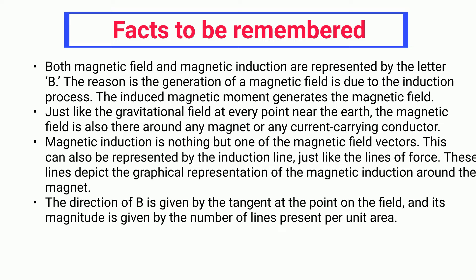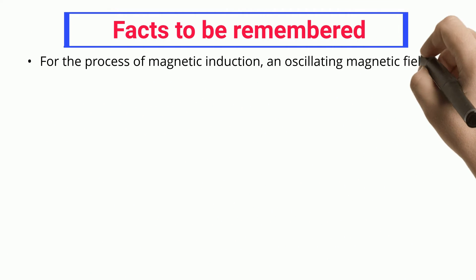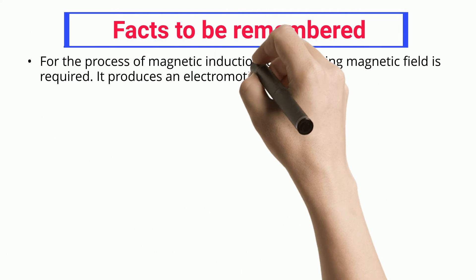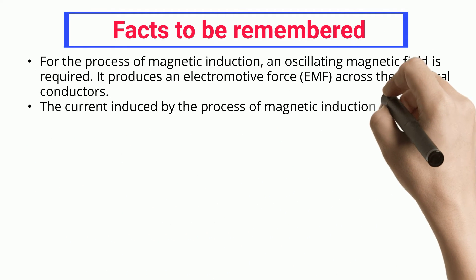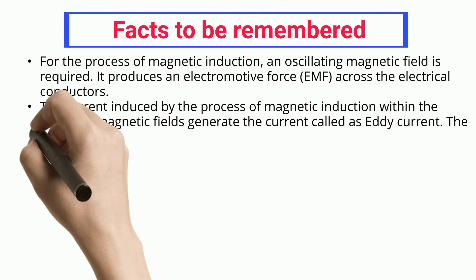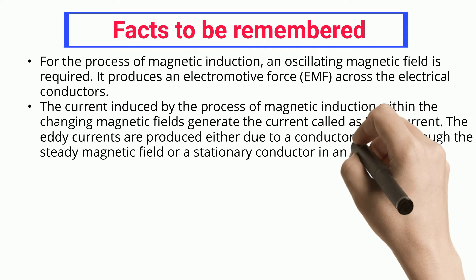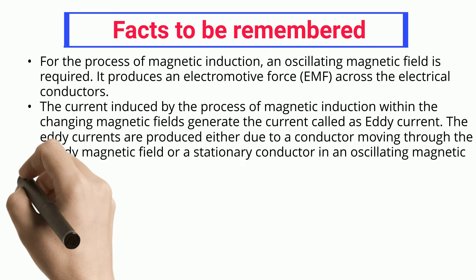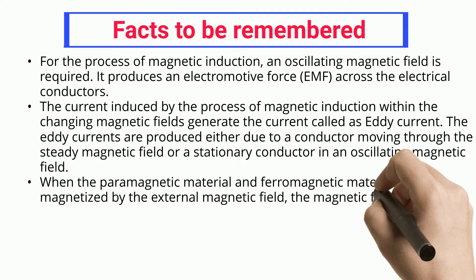The direction of B is given by the tangent at the point on the field, and its magnitude is given by the number of lines present per unit area. For the process of magnetic induction, an oscillating magnetic field is required. It produces an electromotive force, EMF, across the electrical conductors. The current induced by the process of magnetic induction within the changing magnetic fields generates a current called eddy current. Eddy currents are produced either due to a conductor moving through a steady magnetic field or a stationary conductor in an oscillating magnetic field.